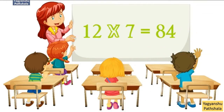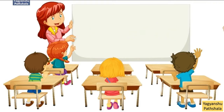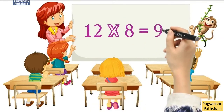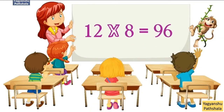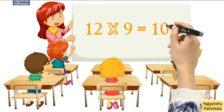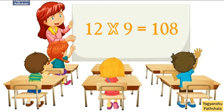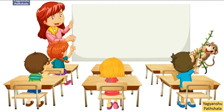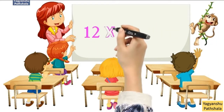12 times 7 equals 84. 12 times 8 equals 96. 12 times 9 equals 108. 12 times 10 equals 120.